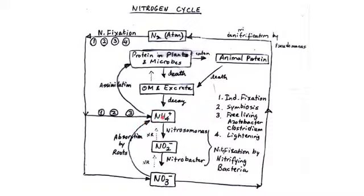Sometimes nitrogen can also be converted directly into ammonia — this occurs through industrial processes, biotic processes, and free-living organisms. In the case of lightning, nitrogen combines with oxygen to form solid nitrate. It is important to note that free nitrogen in the atmosphere can never be of any direct use to plants or animals; it must first be converted into a soluble form such as nitrate or nitrite that can be absorbed by plants.